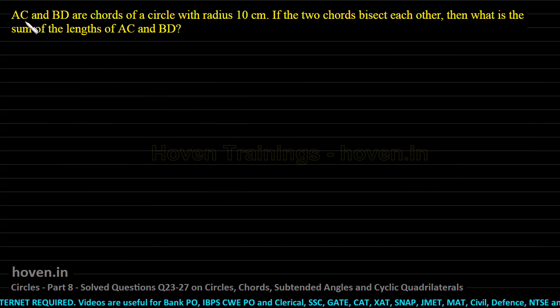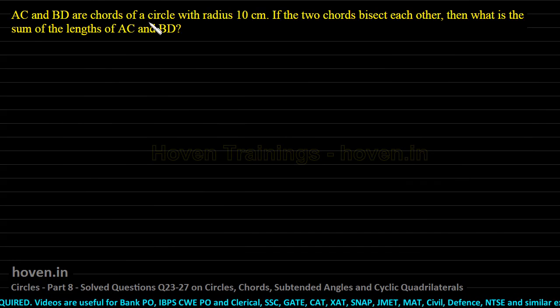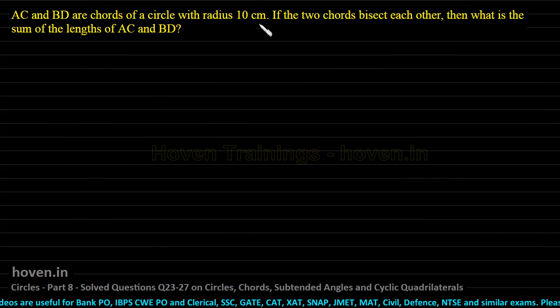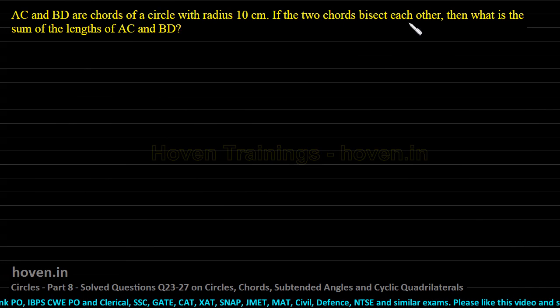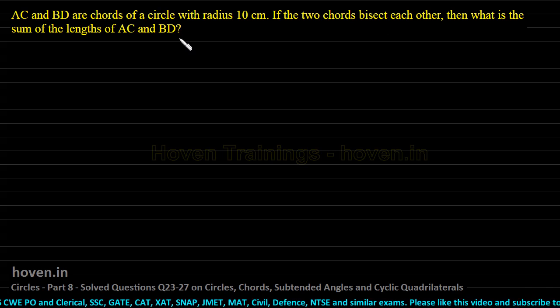AC and BD are chords of a circle with radius 10 centimeters. If the two chords bisect each other, what is the sum of their lengths?